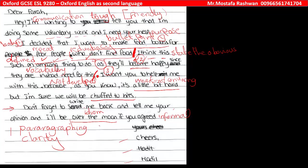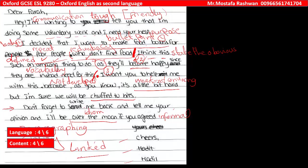Overall, the candidate received 4 marks out of 6 for language — language is really weak — and 4 marks out of 6 for content. There is no clarity, ideas are not developed, no variety of sentence structures, and sentences are not linked effectively using linking words.